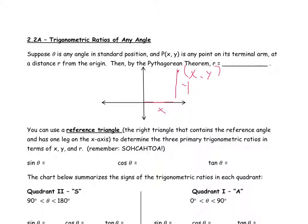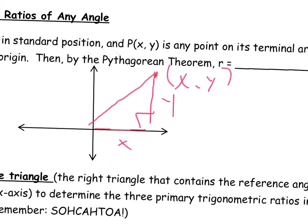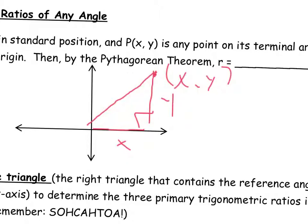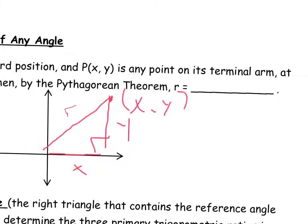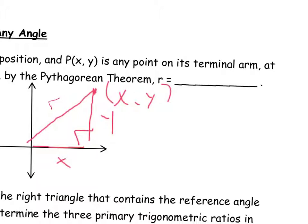We're going to take that point and connect it to the origin, making our right triangle. That arbitrary length connecting the point to the origin does not have a sign — only X and Y can have a sign on the coordinate plane. We'll call that length R. We can use the Pythagorean theorem: X squared plus Y squared equals R squared.